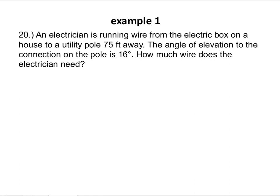Number 20 is our first example. An electrician is running wire from an electric box on a house to a utility pole that's 75 feet away. The angle of elevation to the connection on the pole is 16 degrees. How much wire does the electrician need? So here we've got this utility pole and then 75 feet away along the ground, here's that electric box at the base of some house. A key feature of these problems is setting up a triangle and labeling the side lengths that we know or are trying to find, as well as any angle measures that we know.